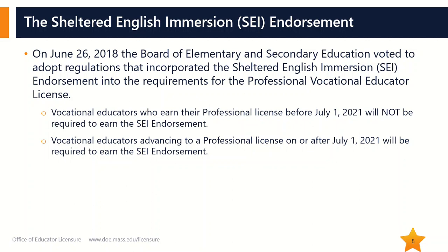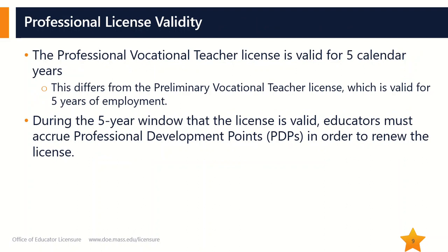For more information on how to earn the SEI Endorsement, please view the corresponding video. Once it has been issued, the Professional Vocational Educator License is valid for five calendar years. Educators should note that this differs from the Preliminary License, which is valid for five years of employment. The Professional License must be renewed every five calendar years regardless of whether or not the educator is working under the license. In order to renew a Professional Vocational Educator license, educators must accrue Professional Development Points, also known as PDPs. For more information about professional license renewal, please review the Chapter 74 Guide for Professional Vocational Technical Educator License Renewal, found at the link below.